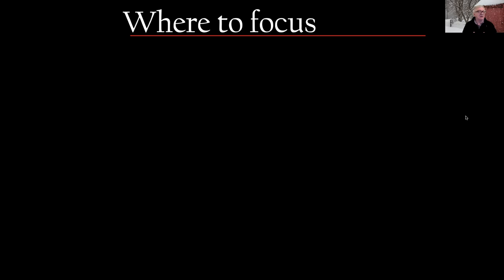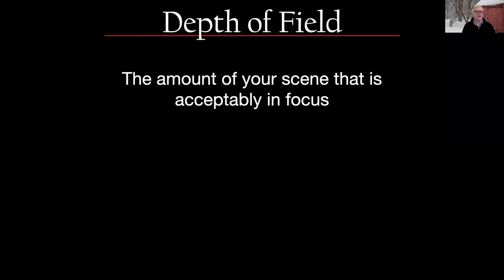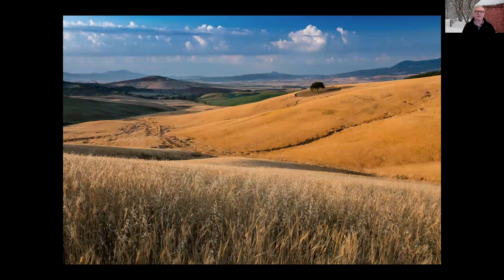A common workshop question is where to focus, and the answer is: it depends on what you want in focus and what you don't. That all comes down to depth of field. Depth of field is the amount of your scene that is acceptably in focus. Sometimes you want everything in the scene in focus, like a wheat field with foreground and mountains in the background — that's full depth of field. Other times you want your subject to stand out as the only thing in focus, which is called selective focus.